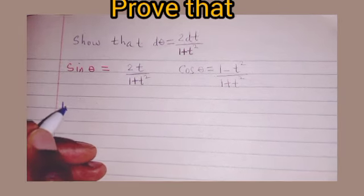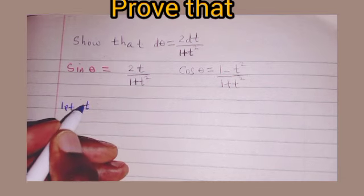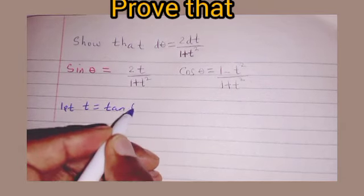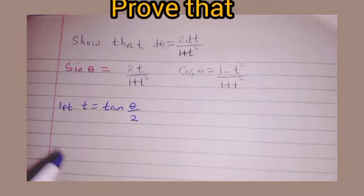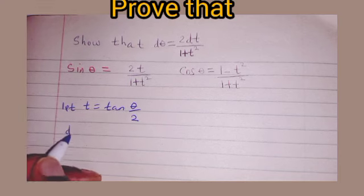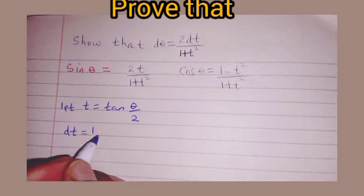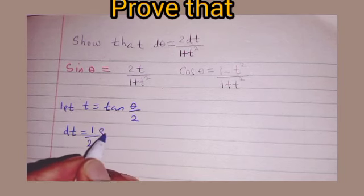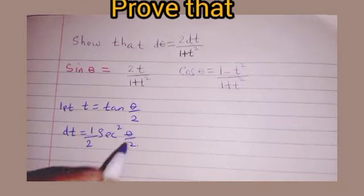To do this, we are going to let t = tan(θ/2). From here we can differentiate both sides with respect to θ, giving 1 = (1/2)sec²(θ/2) dθ/dt.